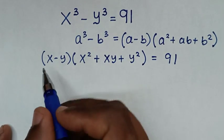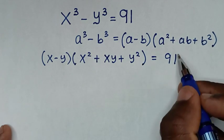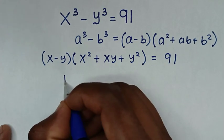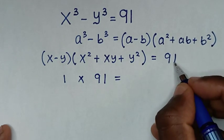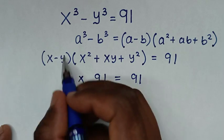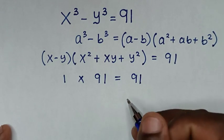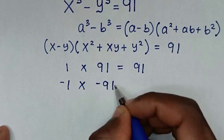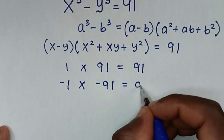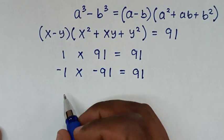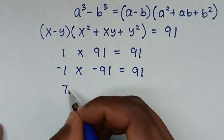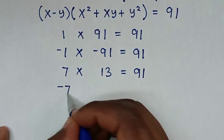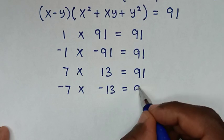In the next step, we have a multiplication of two terms equal to 91. We have choices: it can be 1 times 91 equals 91, or negative 1 times negative 91 equals 91, or 7 times 13 equals 91, or negative 7 times negative 13 equals 91.